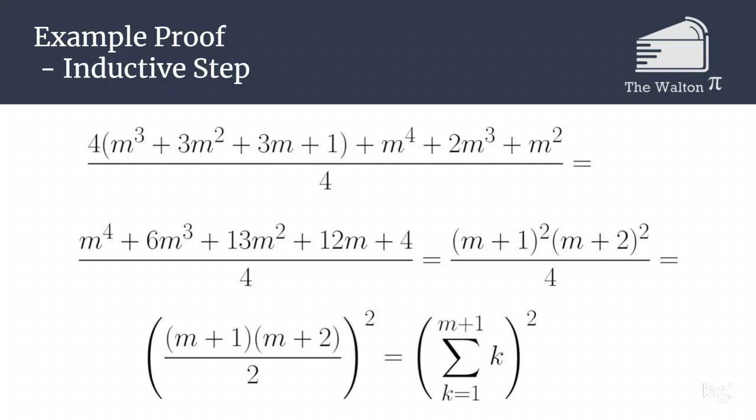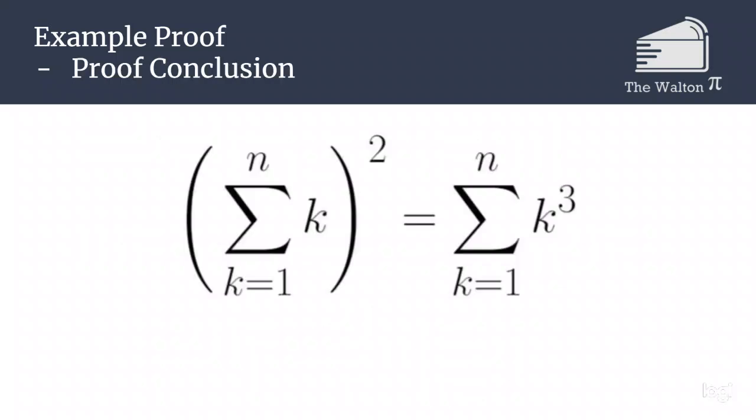So we have successfully shown that the sum from k equals 1 to n of k all squared is equal to the sum from k equals 1 to n of k cubed.